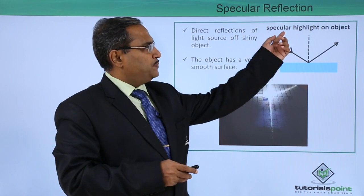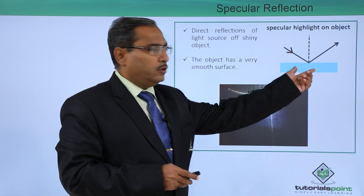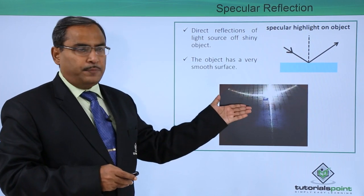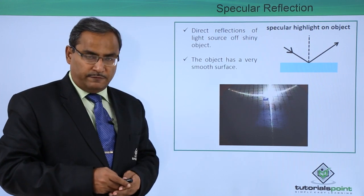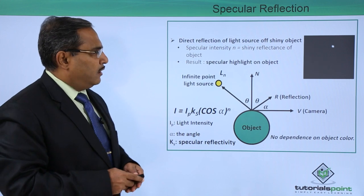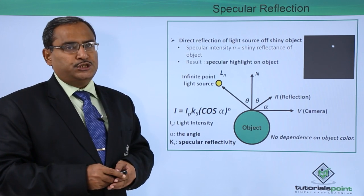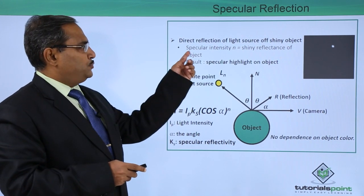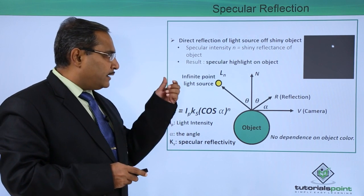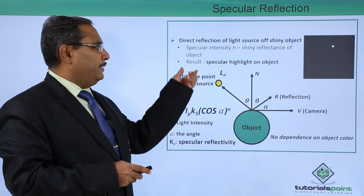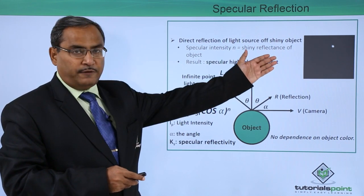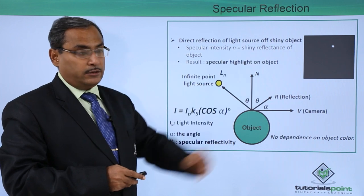Here you can see that the specular light is coming falling on the object and it is reflecting back, and this is a very good example of some specular reflection. Direct reflection of light source off the shiny object. Specular intensity n is equal to shiny reflectance of the object and result is specular highlight on the object. Here you can find that by having a specular highlight on the object.